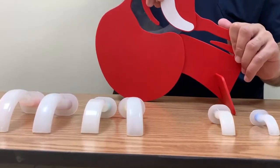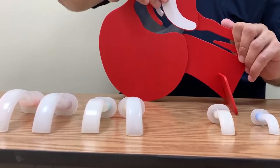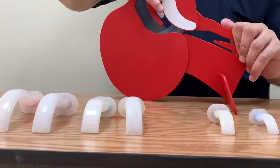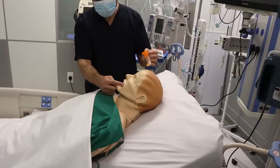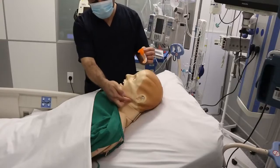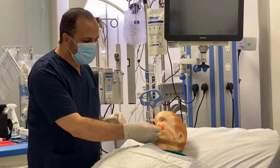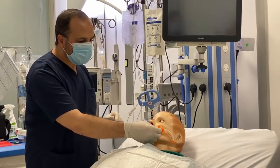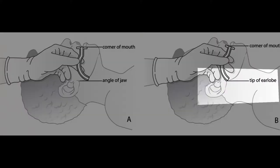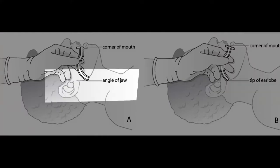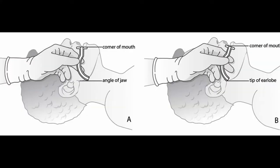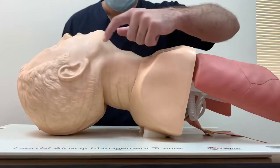There are different sizes, and we need to select the proper size. There are two techniques to insert the oropharyngeal airway, and today we will demonstrate both of them. To select the proper size, measure from the patient's earlobe or angle of the jaw to the corner of the mouth.